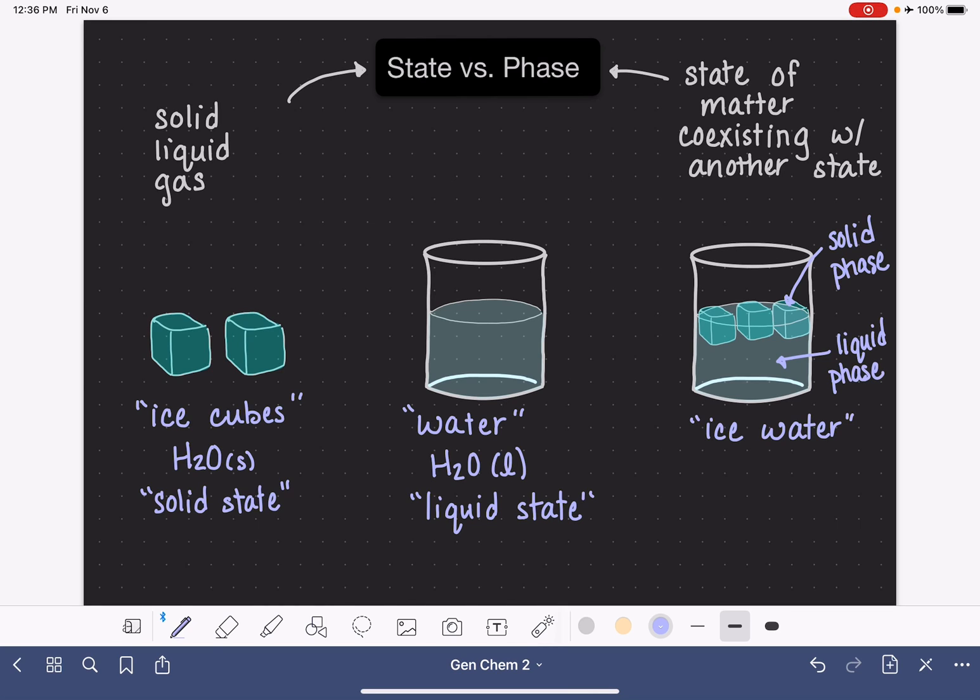Again, as a very subtle difference between the two words, state is the word that we use when we just have all of a substance existing in the same state, such as everything here is a solid or everything here is a liquid. And phase is a word that we use when we have two or more different states of matter that are coexisting with each other.